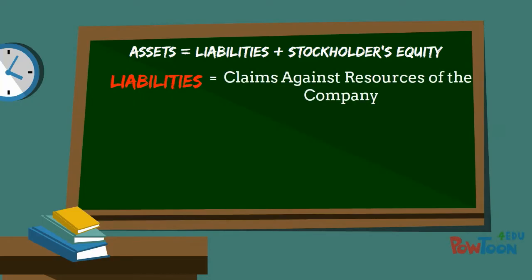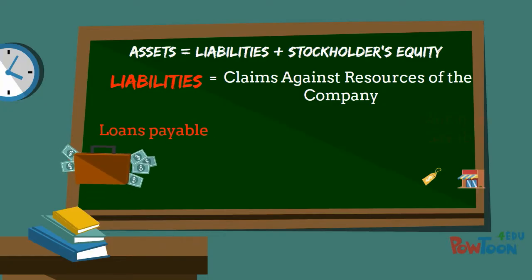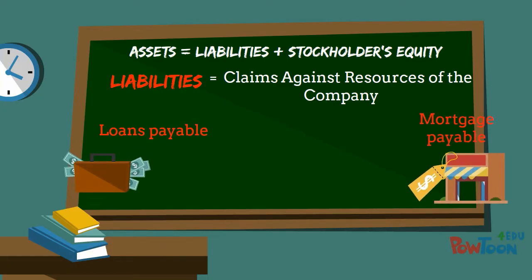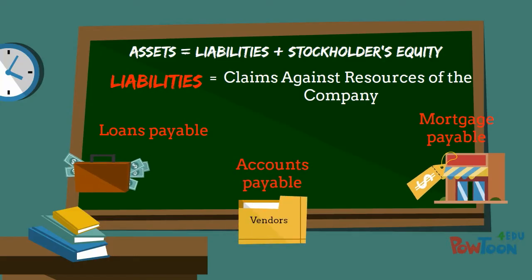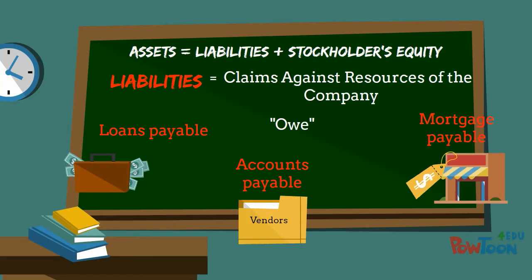Liabilities are claims against resources, which are usually money owed to others. Liabilities are things like loans payable, mortgages payable, and accounts payable, which is money owed by the company to its vendors or suppliers.